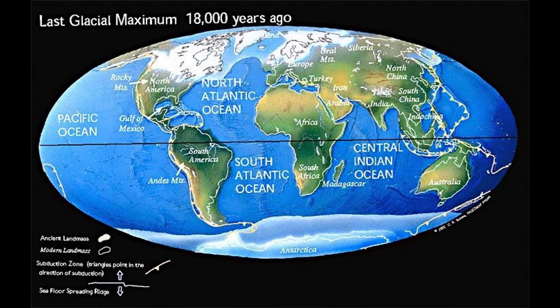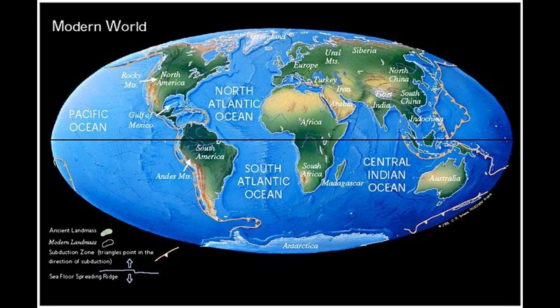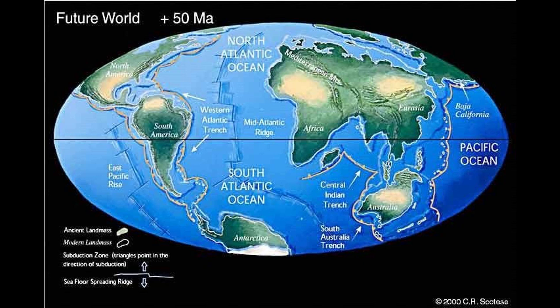We are entering a new phase of continental collision that will ultimately result in the formation of a new Pangea supercontinent in the future. Global climate is warming because we are leaving an ice age and because we are adding greenhouse gases to the atmosphere. If we continue present-day plate motions, the Atlantic will widen, Africa will collide with Europe closing the Mediterranean.